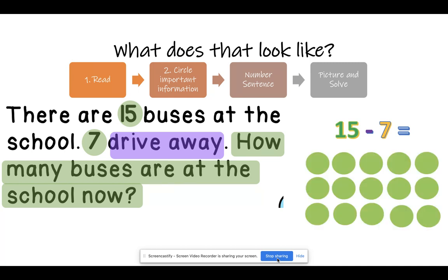Let's draw the picture. Here I have 15 circles. I drew 15 circles to represent the 15 buses that we started with. Now I need to take away 7. I can just simply mark them with an X. 1, 2, 3, 4, 5, 6, 7. Can you see how many buses were left? What was the answer? Good. The answer was 8. 8 buses are at the school now because 15 minus 7 equals 8.